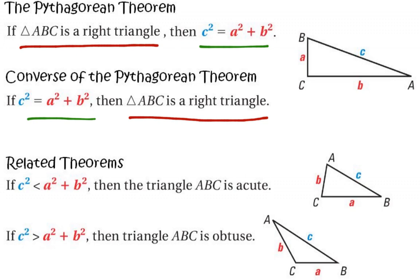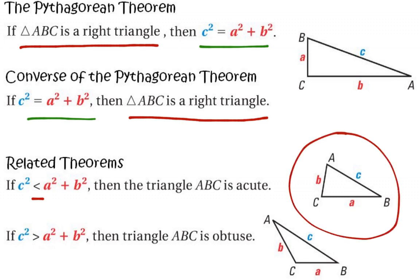In related theorems: if C squared is less than A squared plus B squared, then it's an acute triangle. And if C squared is greater than A squared plus B squared, then the triangle must be an obtuse one.